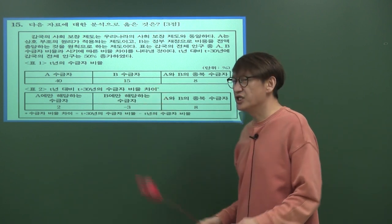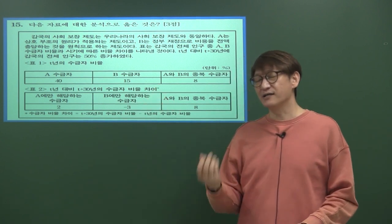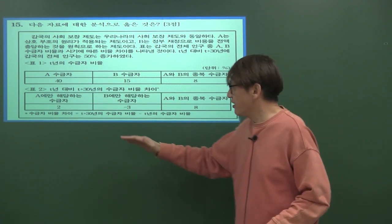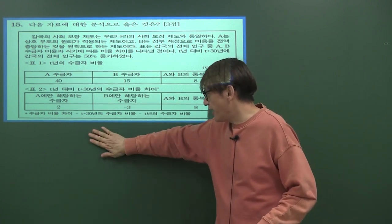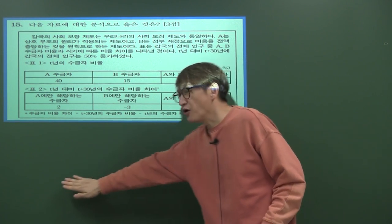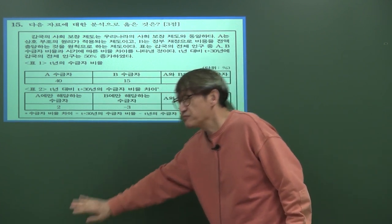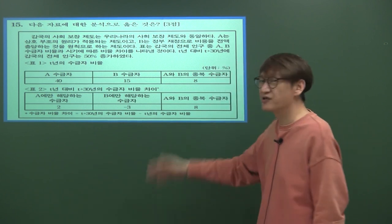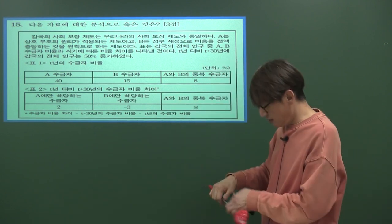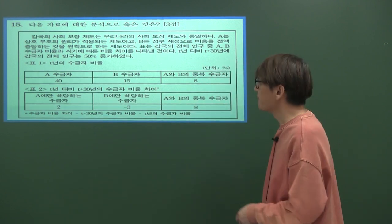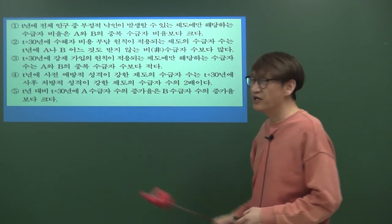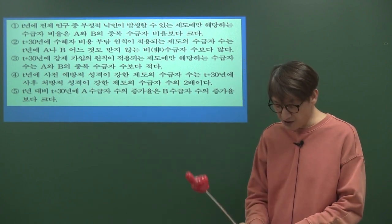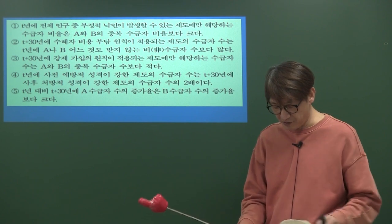온라인 강의이기 때문에 직접 쓰면서 풀 수는 없지만, A·B 수급자와 T년·T+30년 수급자를 만드는 표를 만들면 나머지 부분은 굉장히 쉽게 해결되실 것입니다.